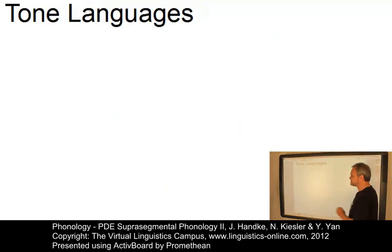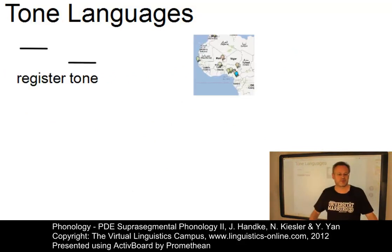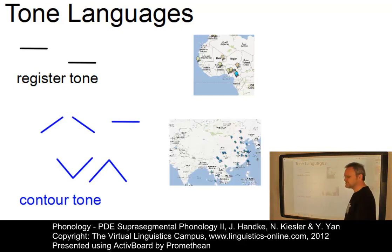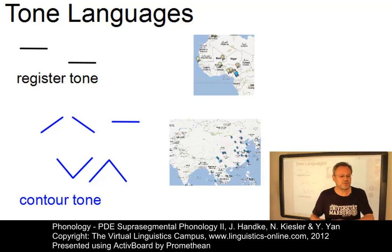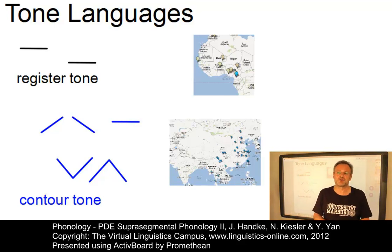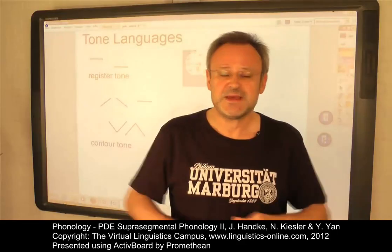The simplest kind of tone language uses two possible tones: high and low. Such languages are called register tone languages and we find examples of them primarily in Africa, for example within the Bantu languages. More complex tonal systems are the so-called contour tonal systems — that is, they involve tones with gliding movements: rising, falling, rise-fall, and fall-rise. Many languages of Southeast Asia are contour tone languages, for example Mandarin Chinese. Let us exemplify this.